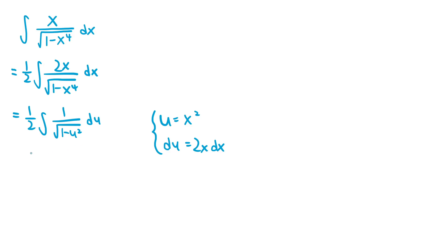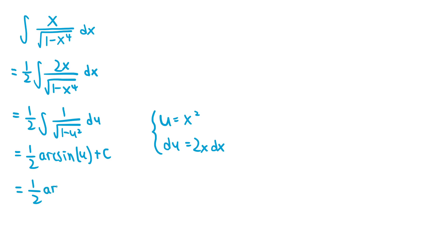So this expression is equal to 1 half times arc sine of u plus some constant c. If we substitute x squared back in for the u, we get the final answer, which is 1 half arc sine of x squared plus c.